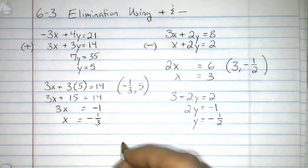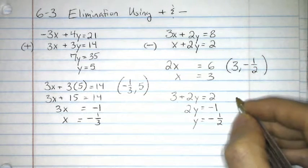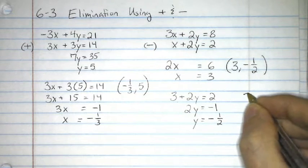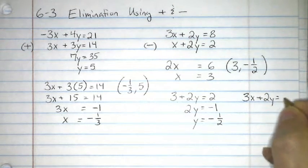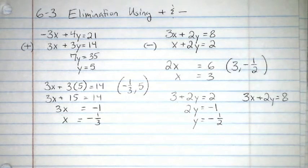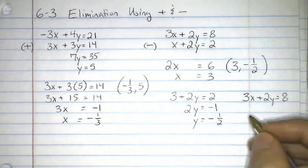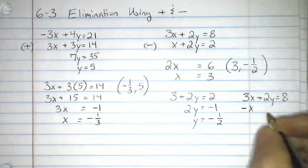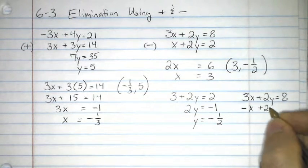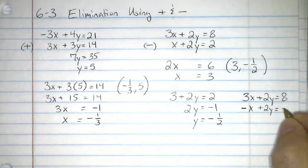Suppose I had a system of equations that looked something like this. Let's say 3x plus 2y equals 8. Yes, I know, I chose the same one. Now, for the second one, suppose I had this. Negative x plus 2y equals negative 3.